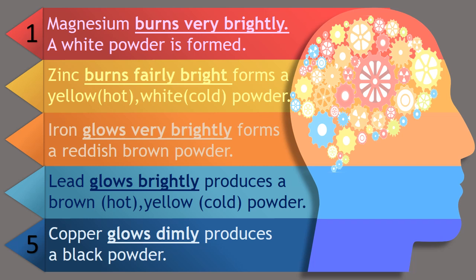Comparing zinc with iron and lead: zinc burns fairly bright and produces a yellow powder when hot and a white powder when cold. Zinc is more reactive than iron and lead. Iron glows very brightly to produce a reddish-brown powder. Meanwhile, lead only glows brightly to form a brown powder when hot and a yellow powder when cold. Therefore, we can conclude that iron is more reactive than lead.